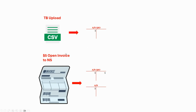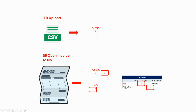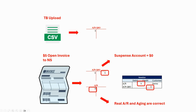When I upload the open invoices, instead of using the revenue account I will be using the accounts receivable QBO suspense account. That way my accounts receivable QBO account at the end will have a zero balance, and my real accounts receivable account will have the correct five dollar balance with the customer tied to that transaction. So in NetSuite you will be able to apply payments to the corresponding customer.